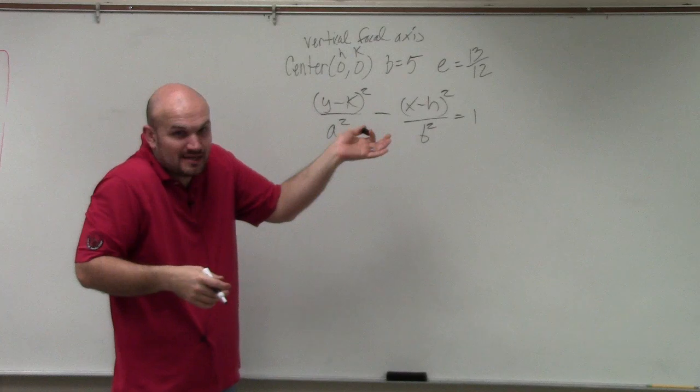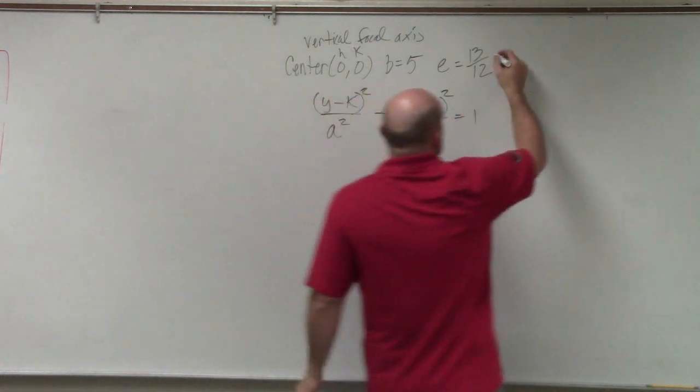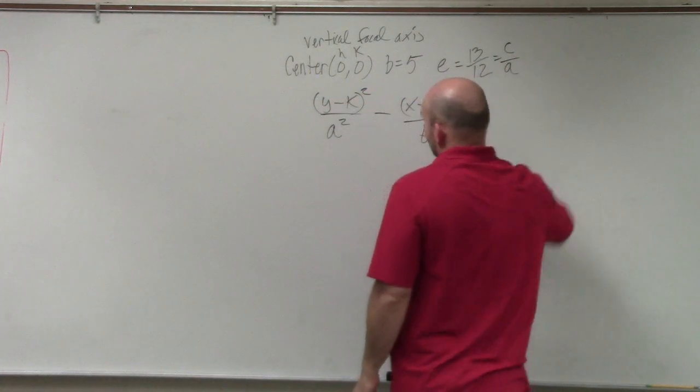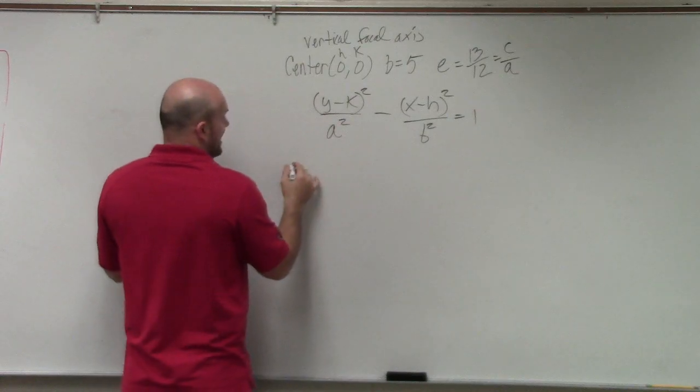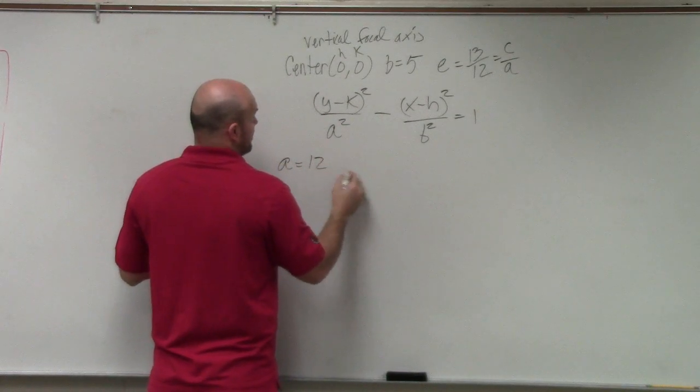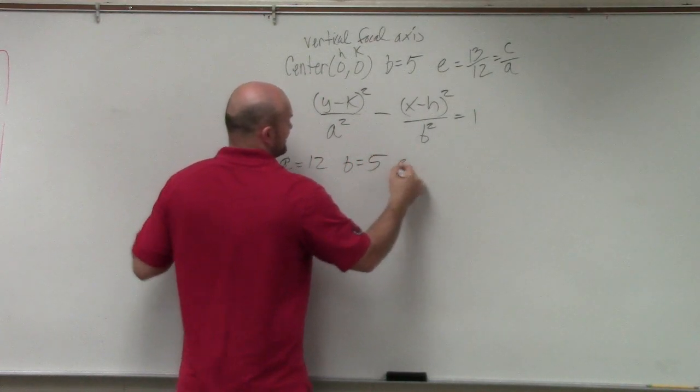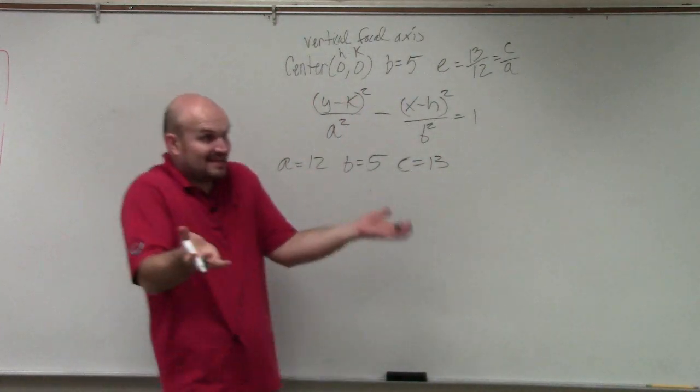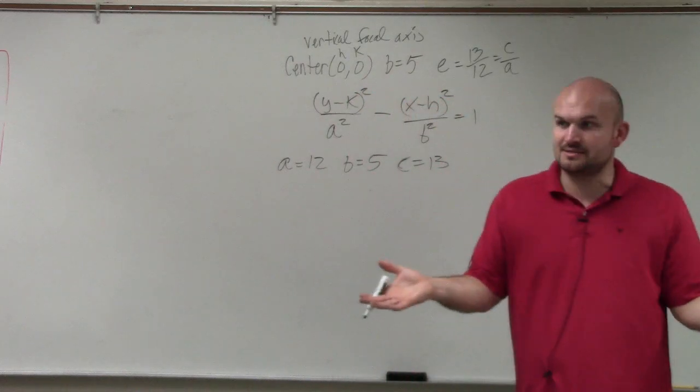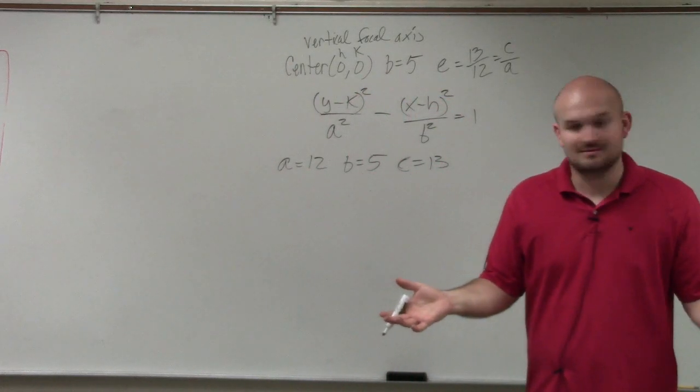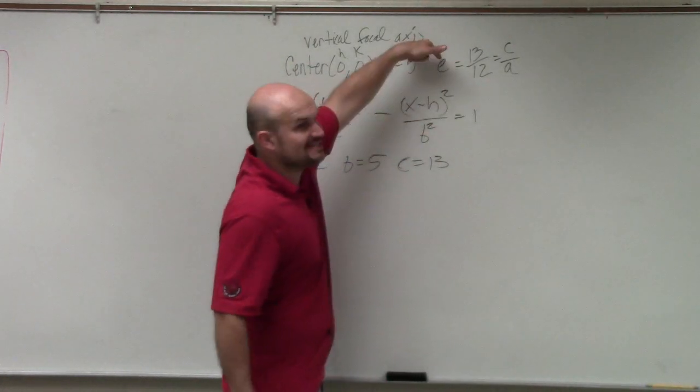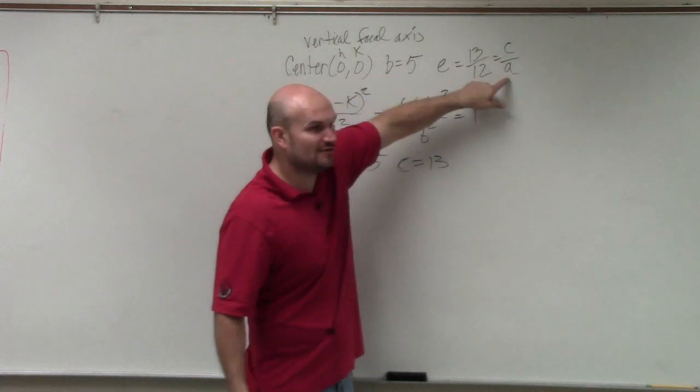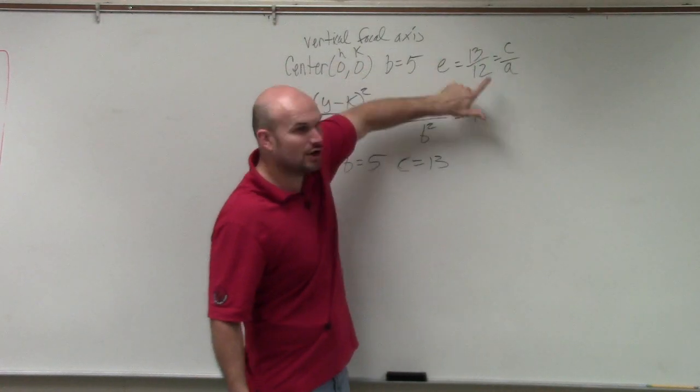Well, remember, what is eccentricity, guys? c over a. So we know that a has to equal 12, b equals 5, and c equals 13. Can you guys make that decision with me? Does that make sense? Eccentricity is c over a.